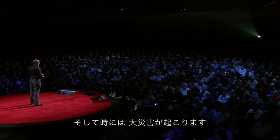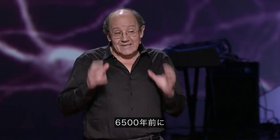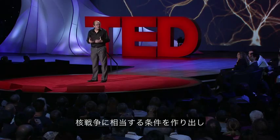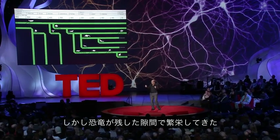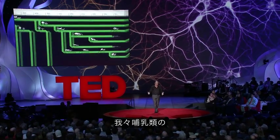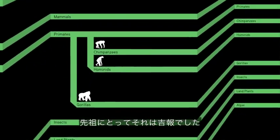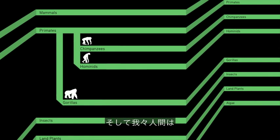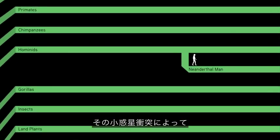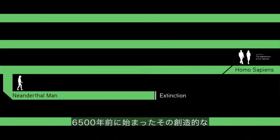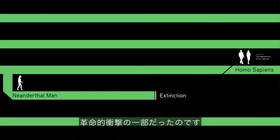And occasionally, there are disasters. 65 million years ago, an asteroid landed on Earth near the Yucatan Peninsula, creating conditions equivalent to those of a nuclear war. The dinosaurs are wiped out. Terrible news for the dinosaurs, but great news for our mammalian ancestors, who flourished in the niches left empty by the dinosaurs.